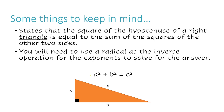I like to think of the right angle box as pointing to the hypotenuse. If this box were an arrow, in my mind it's pointing to the line that's diagonally across from it. It's saying, 'Hey, the hypotenuse is over there, across.' So side A is called a leg, side B is called a leg, and the hypotenuse is side C.